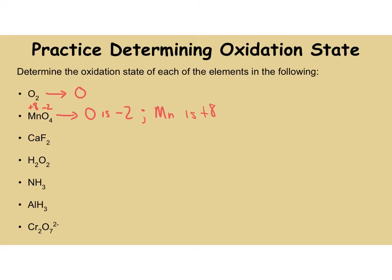In CaF₂, F is automatically going to be minus 1. There are two of them, which means Ca is 2 plus. So F is minus 1 and Ca is plus 2. In H₂O₂, this is the weird one. It is a peroxide, so hydrogen is going to take precedence. If hydrogen is plus 1, then O is minus 1. This is the tricky one — we have to do H first: H is plus 1, O is minus 1.